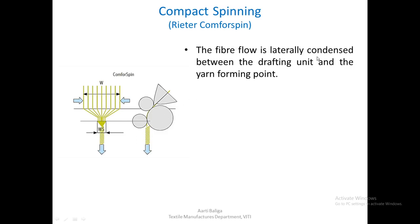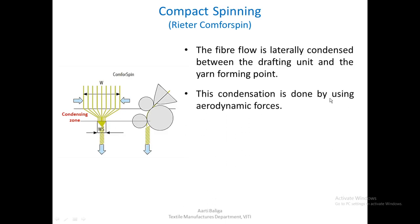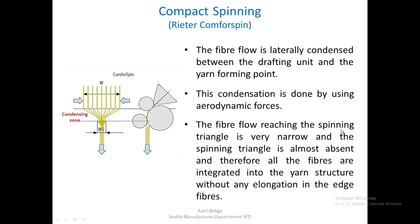In compact spinning, the fiber flow is laterally condensed between the drafting unit and the yarn forming point. In this condensing zone, a lateral condensation is applied, which results in a reduction in the spinning triangle at the yarn forming point. The condensation is done using aerodynamic forces. The fiber flow reaching the spinning triangle is very narrow and the spinning triangle is almost absent. Therefore, all the fibers are integrated into the yarn structure without any elongation in the edge fibers.